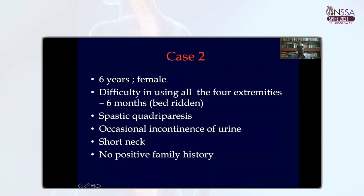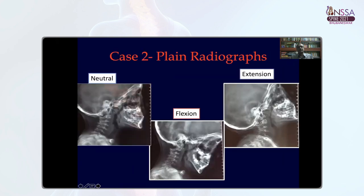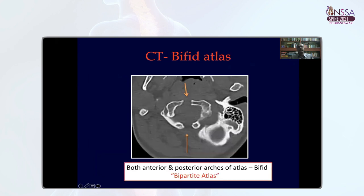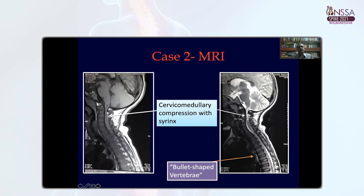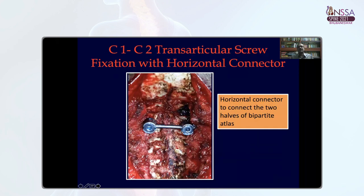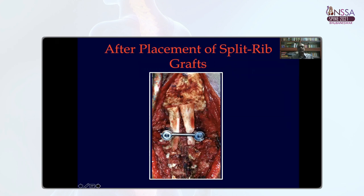Case two is a six-year-old female who was bedridden due to spastic quadriparesis. She had a short neck, but there was no positive family history. Radiological parameters showed features of atlantoaxial dislocation, and other radiographs showed bullet-shaped vertebrae in the rest of the spine. CT shows not only odontoid hypoplasia but significant bifid anterior as well as posterior arch of atlas — basically in this child the atlas was bipartite. MRI showed significant compression at the cervical medullary junction with significant intramedullary signal changes. We performed transarticular screw fixation and, since both arches of atlas were bifid — the child had a bipartite atlas — we connected the two transarticular screws using a horizontal cross connector and supplemented it with rib graft to achieve bone fusion.